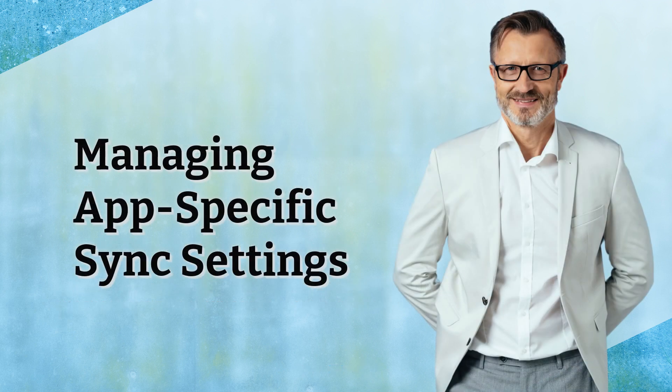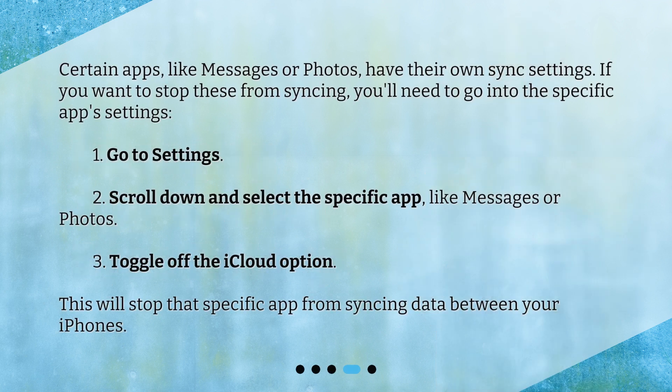Managing app-specific sync settings. Certain apps, like Messages or Photos, have their own sync settings. If you want to stop these from syncing, you'll need to go into the specific app settings. Go to Settings, scroll down and select the specific app, like Messages or Photos, then toggle off the iCloud option. This will stop that specific app from syncing data between your iPhones.